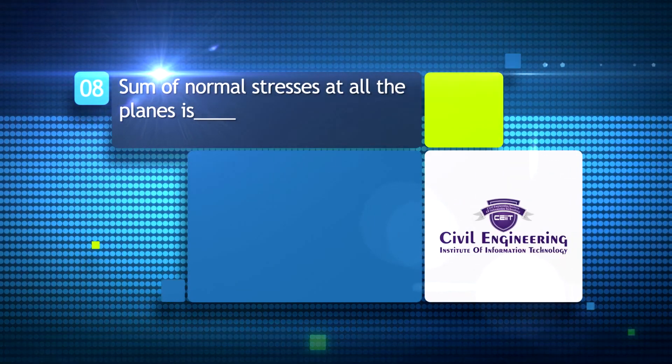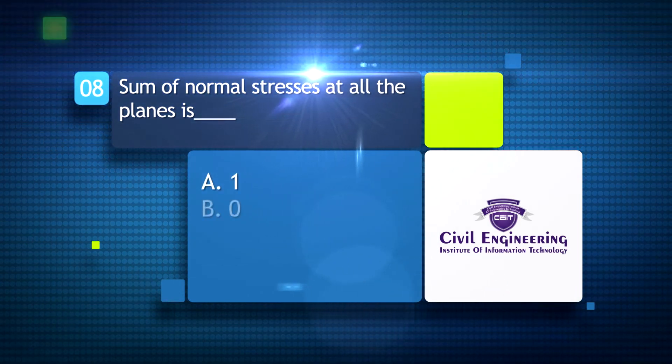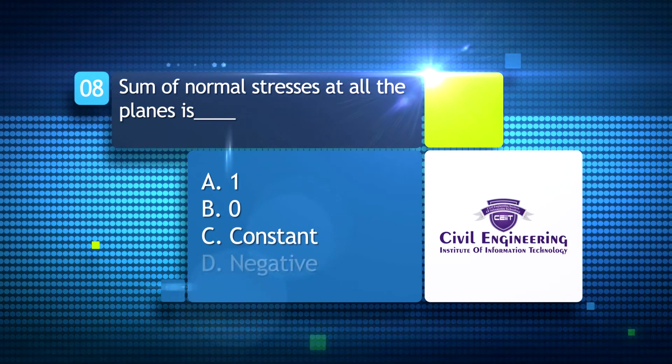Sum of normal stresses at all the planes is: A. 1, B. 0, C. constant, D. negative.